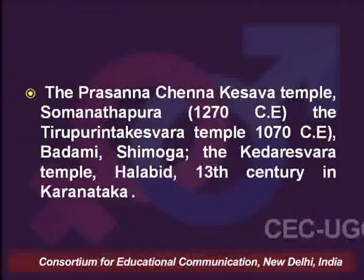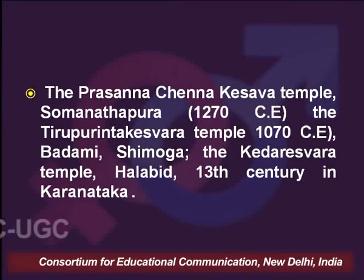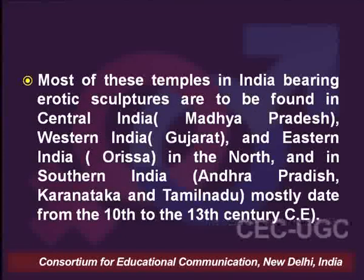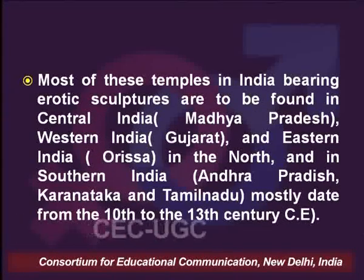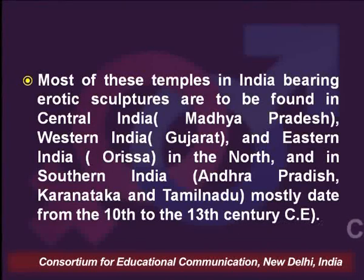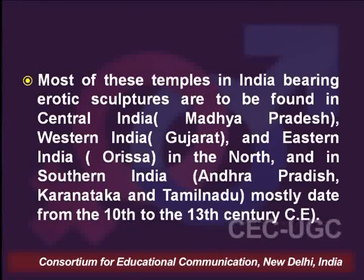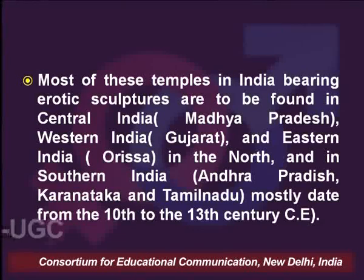These temples were found in East, West, North, and South India. In South India, one can cite the Veer Bhadraswamy temples of Kurnool and Guntur district dated 12th century in Andhra Pradesh, the Kesaya temple, and the Kedarsivara temple at Halibut, 13th century in Karnataka. Most of these temples in India bore erotic sculptures, prominently in Central India (mostly Madhya Pradesh), Western India (Gujarat), Eastern India (Orissa), and in South India (mostly Andhra Pradesh, Karnataka, and Tamil Nadu), dating from the 9th to the 13th or 14th centuries CE.